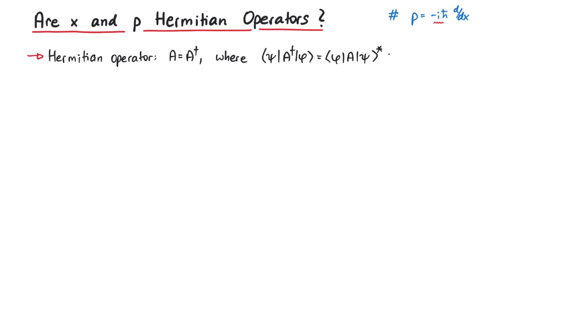So if A equals A dagger, we can also write this term as psi A phi. In order to investigate whether the position operator and the momentum operator are Hermitian operators, we will now focus on these two terms here and check whether they are really equal.